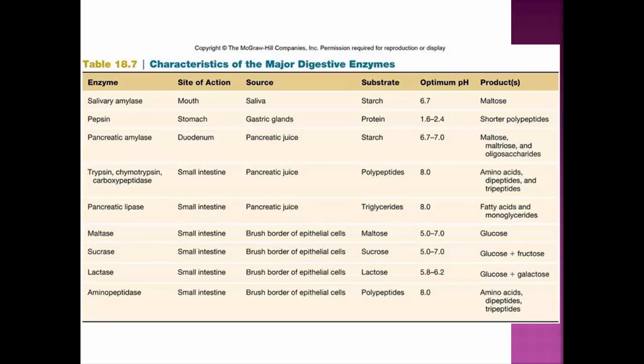The rest of the list is all brush border enzymes — those are integral proteins in the cell membrane of the columnar epithelial cells lining the intestine. Maltase breaks down maltose into glucose, sucrase breaks down sucrose into glucose and fructose, and lactase breaks down lactose into glucose and galactose. Finally, aminopeptidase breaks down polypeptides into amino acids.